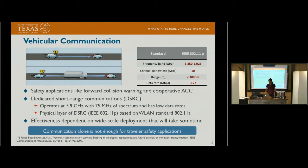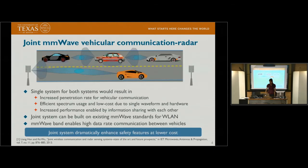So communication alone is not enough for traveler safety applications. That's why we propose to use joint millimeter wave vehicular communication and radar. This will allow increased penetration rate for vehicular communication, which has yet not widespread. Efficient spectrum usage because we are using the same spectrum for both radar and communication. Low cost due to single waveform and hardware. Increased performance enabled by sharing of information from radar to communication and communication to radar. The joint system can now be built on the existing millimeter wave standard such as 802.11ad, and it will have high data rate because of high bandwidth.